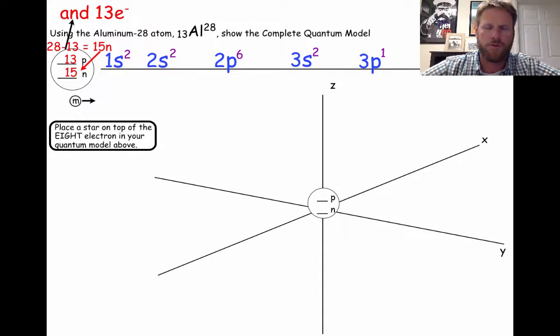Hopefully you could at least make it this far. An aluminum atom has 13 electrons that you have to assign to their appropriate energy levels in the quantum model. Filling in the electrons is fairly easy until you get to the 3p's. When you get to 3p you have 12 electrons assigned and you only need to assign one more. So in that 3p energy level, there's only going to be one electron.